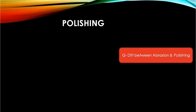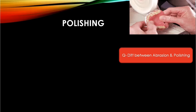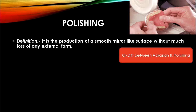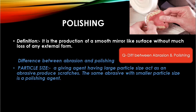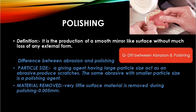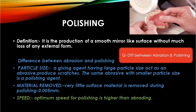Polishing: the image that comes to mind is using pumice for polishing of a denture. It is the production of a smooth, mirror-like surface without much loss of external form. Difference between abrasion and polishing: large particle size acts as abrasive but produces scratches, whereas the same abrasive or small particle size acts as a polishing agent. In polishing, very little surface material is removed — nearly 0.005 mm. The optimum speed for polishing is higher than for abrasion.